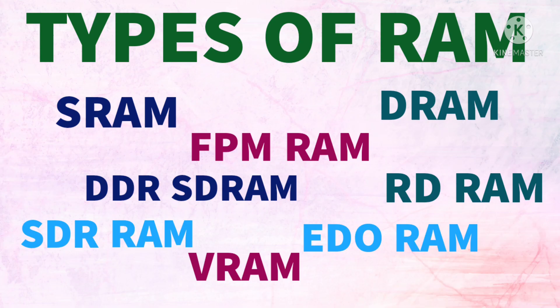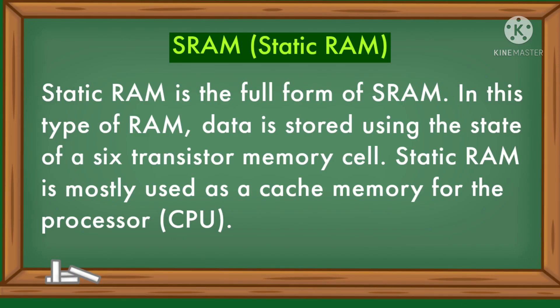Hello all, today we will learn about different types of RAM. SRAM, or Static RAM — Static RAM is the full form of SRAM. In this type of RAM, data is stored using the state of a six-transistor memory cell.